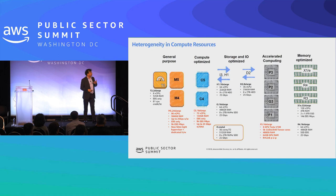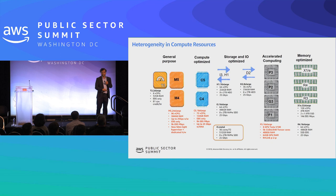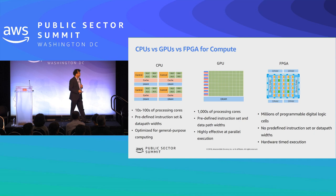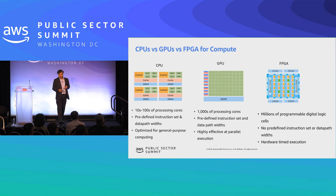Even in the compute area, based on feedback we got, heterogeneity in compute is moving in new directions. It's no longer about homogeneity in compute processing. We look at compute as general purpose, compute optimized, storage optimized, and bare metal instances. Due to machine learning and AI, people are moving into accelerated computing. CPUs have 10 to 100 processing cores. GPUs have roughly 1,000 processing cores. FPGAs have millions of processing cores. So sometimes accelerated computing helps quite a lot in research.